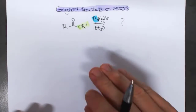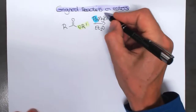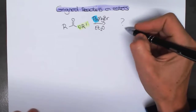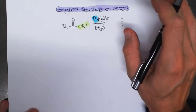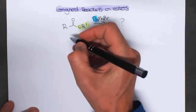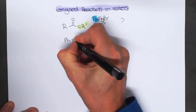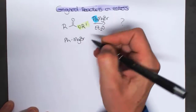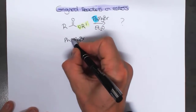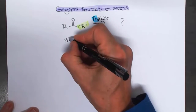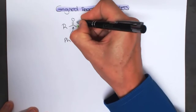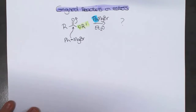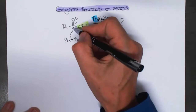Now if you follow the principles of what happened in those reactions and we extend it to a Grignard, we can actually predict what the product will be, and it leads us on to some really interesting chemistry. Grignard reagents are a high-energy sigma bond — that's the nucleophilic part. You can draw it as a minus charge on the carbon but that's not strictly correct. We can show the addition of that very effective nucleophile to the carbonyl carbon, which is very electrophilic.